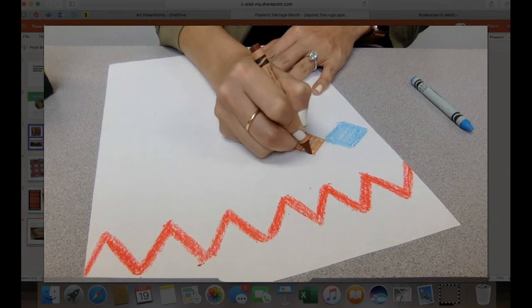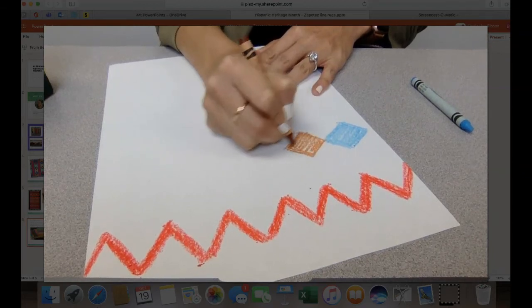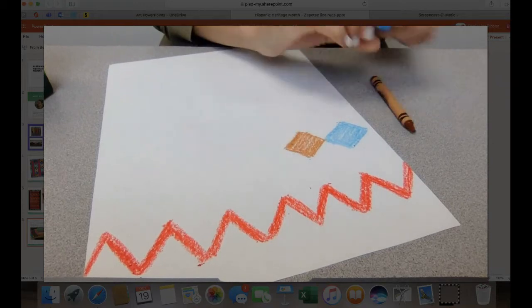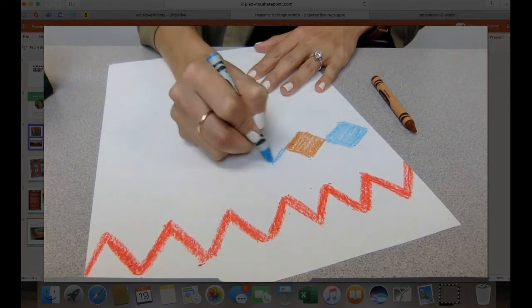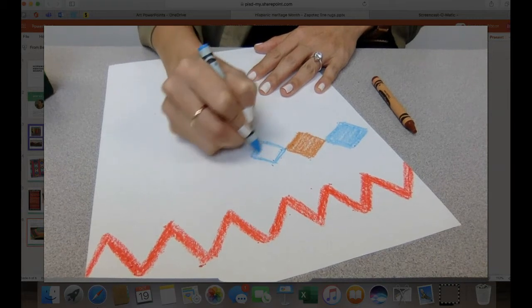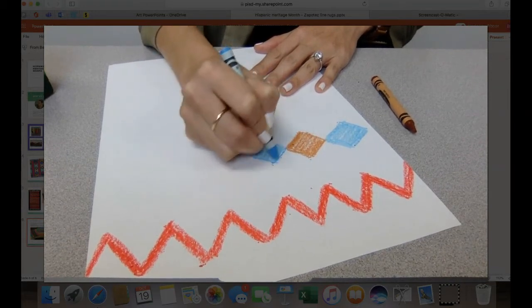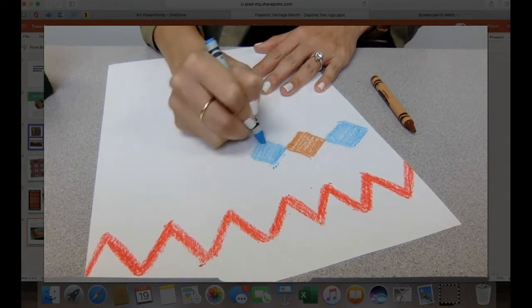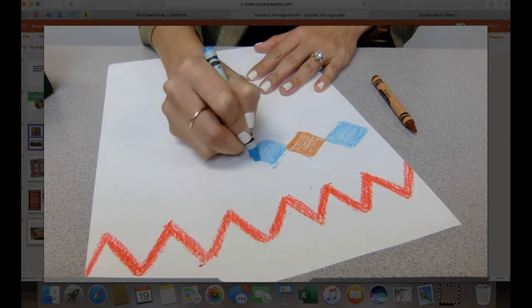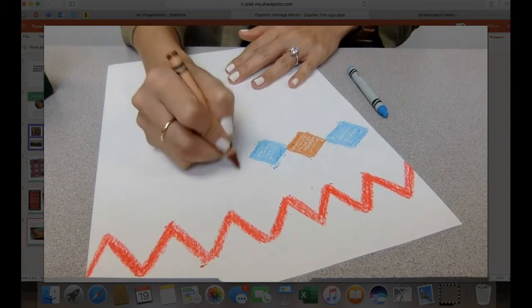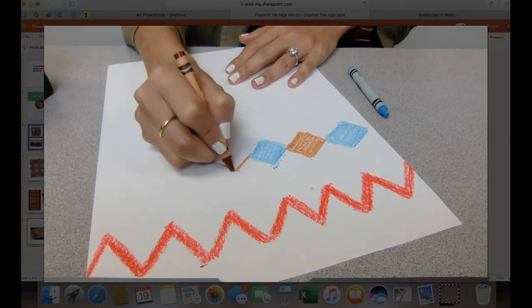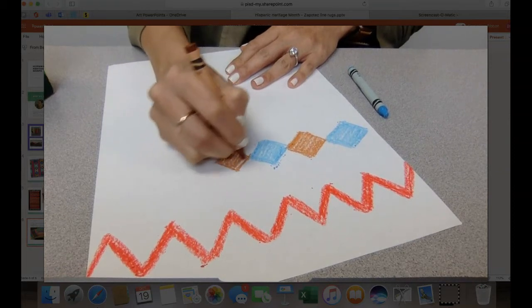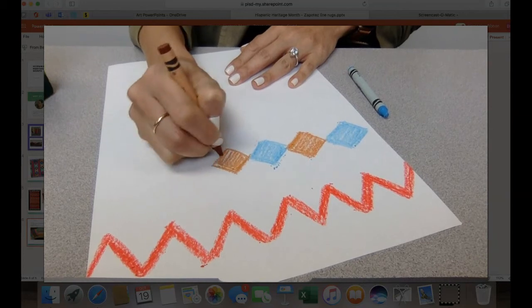So if you talked about patterns in class, you can have an AB pattern. So I think I'm going to do blue, brown, blue, brown. And again, when I'm coloring, I'm fighting the white. Fighting the white and staying inside my lines. This is an AB pattern. So I have my brown and blue.